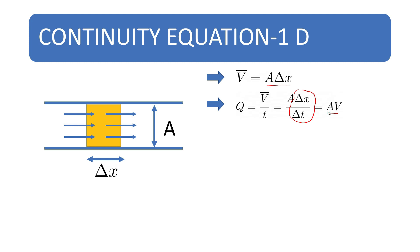this is the velocity of the fluid. Therefore Q is equal to A into V.